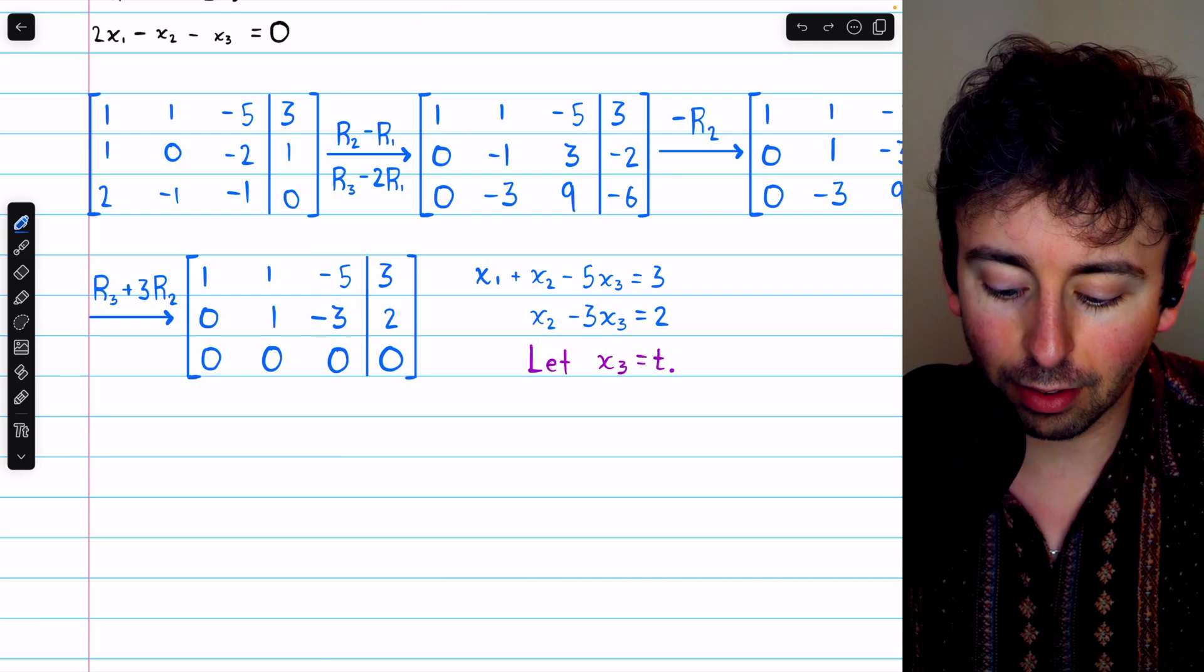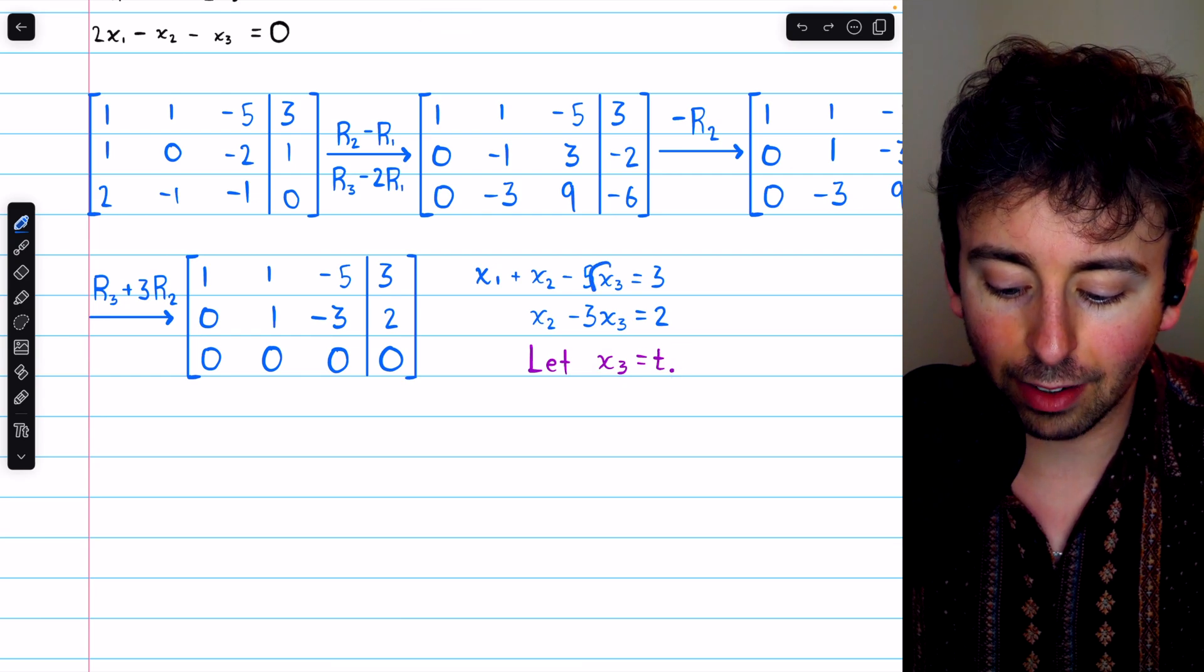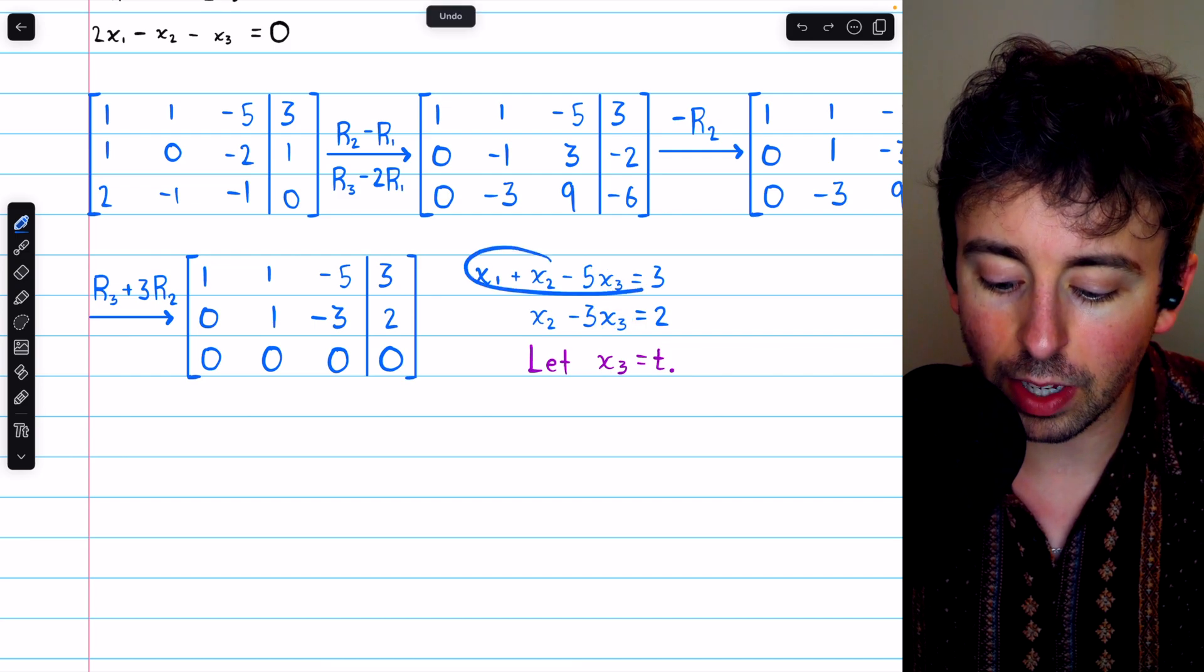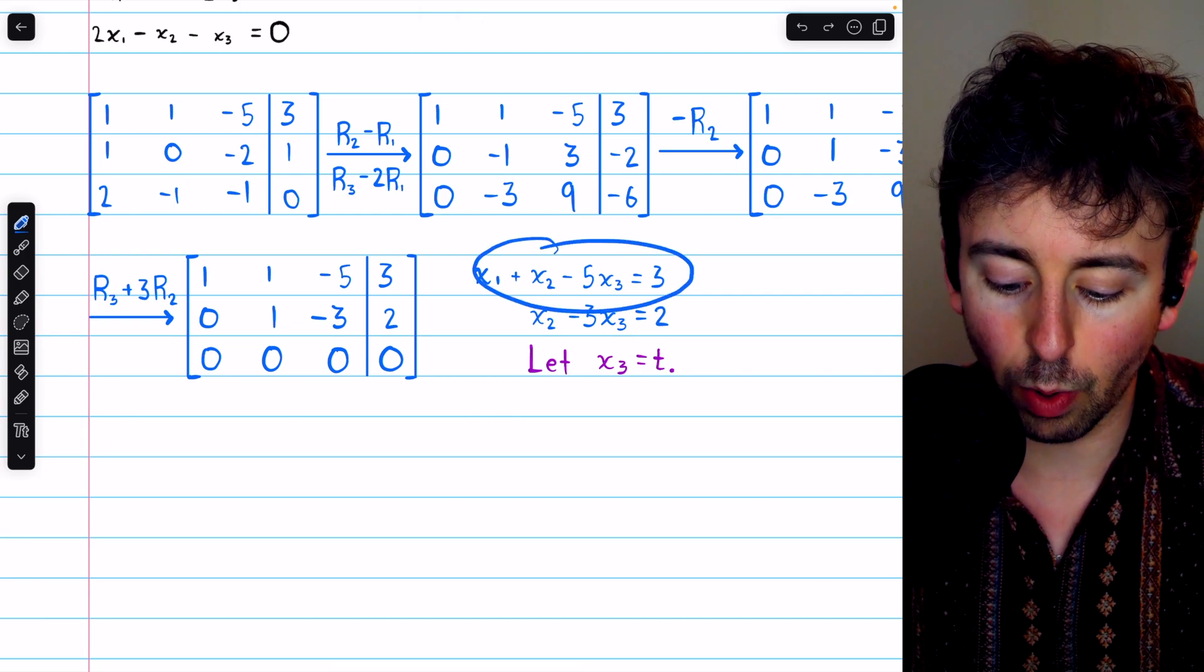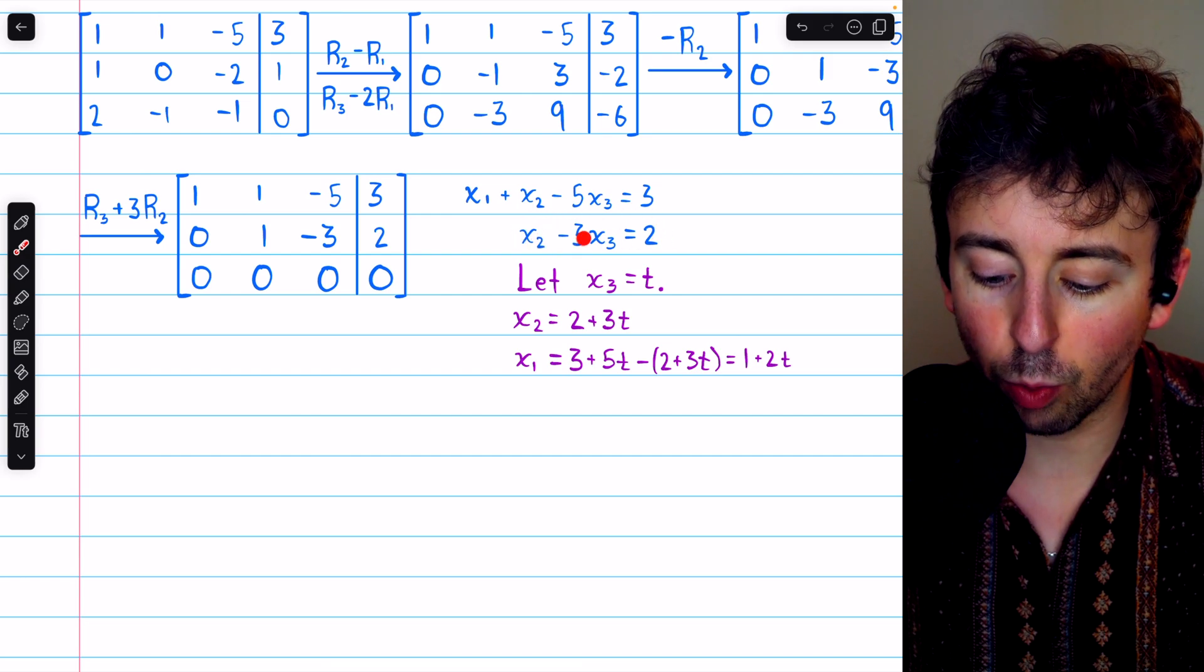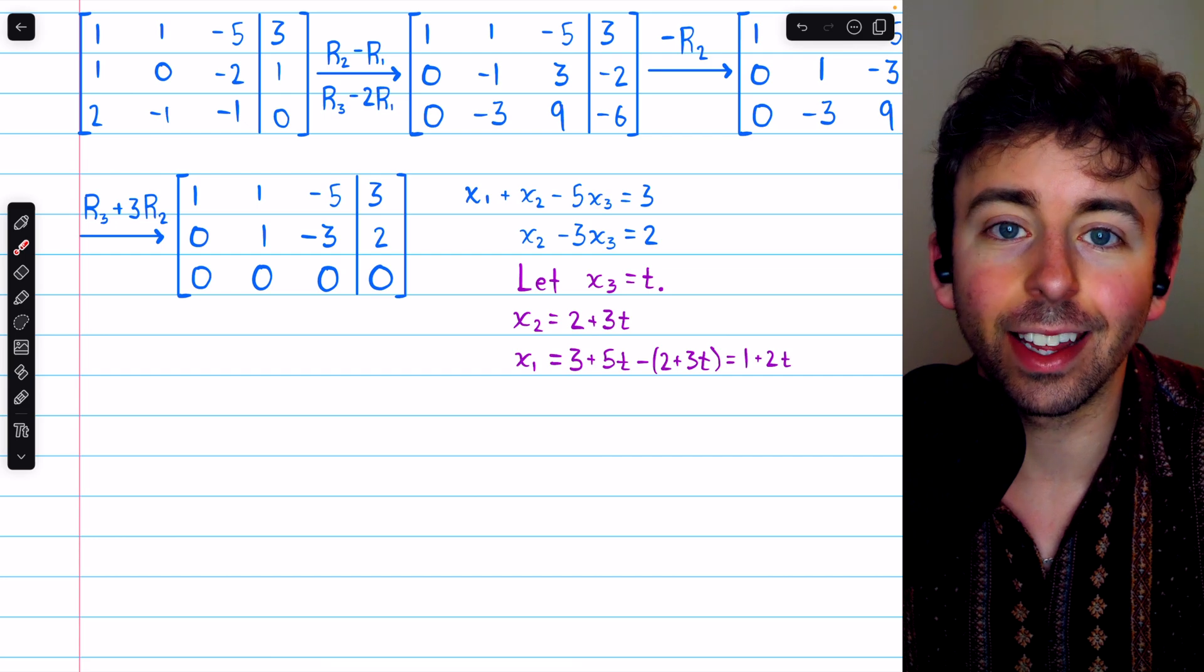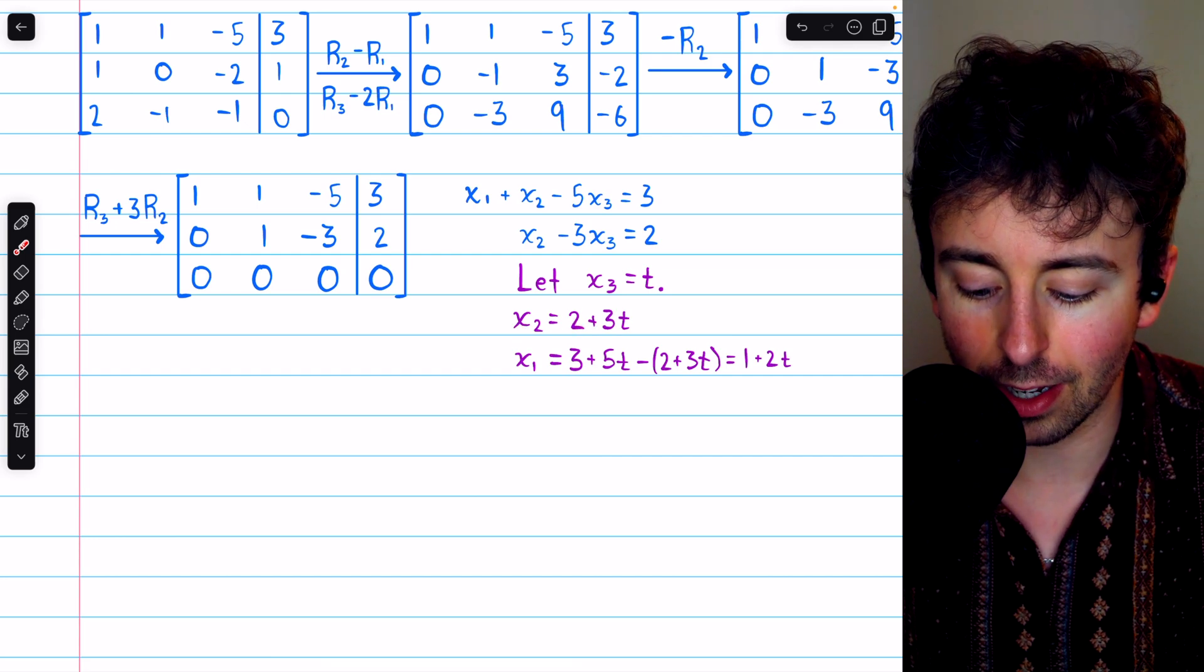So let's say x3 equals this arbitrary parameter t. Then we'll replace x3 with t in those two above equations, and we'll solve each of these equations for the leading variable. So we'll solve this equation for x1, and we'll solve this equation for x2. Now from this equation, we can add 3x3 to both sides, but x3 is t, so that's just adding 3t to both sides. And we have x2 equals 2 plus 3t.